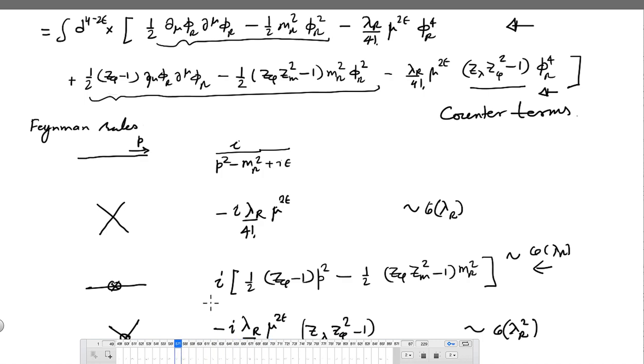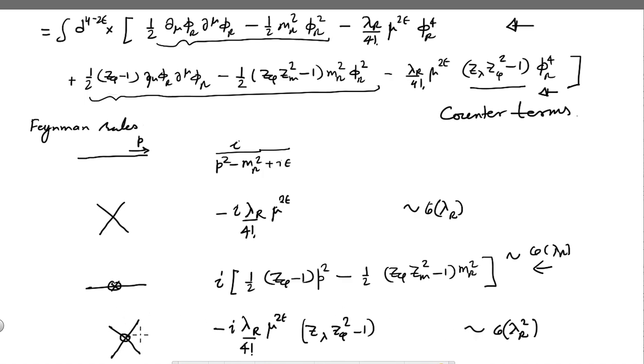Now here you see this vertex is of order lambda r square. Because when you have written the action in terms of renormalized fields and parameters, this is a term which we produce. That has an explicit lambda r here and because of these zs you get another factor of lambda r. It starts at order lambda r. That is why it is lambda r square.